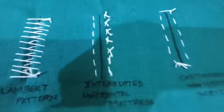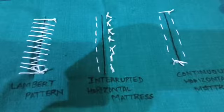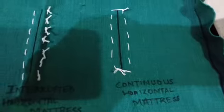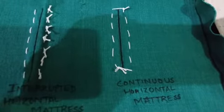The sixth one is the interrupted horizontal mattress. It is also a type of apposition suture. The next is the continuous horizontal mattress.